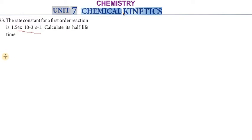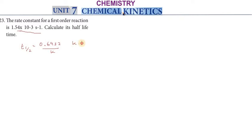For a first order reaction, the half-life formula is: t½ = 0.6932 / k. Here the rate constant k = 1.54 × 10⁻³ per second.